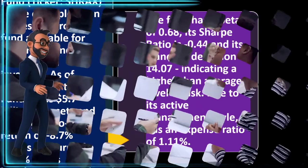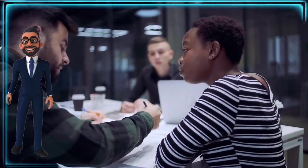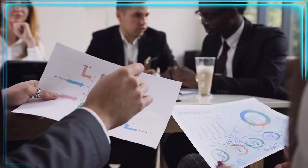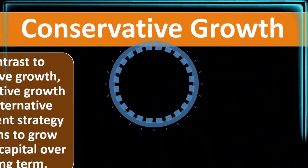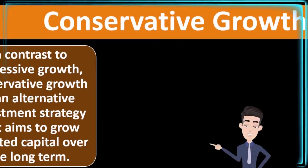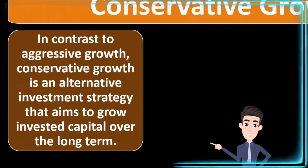The fund has a beta of 0.68, a Sharpe ratio of negative 0.44, and a standard deviation of 14.07, indicating a higher-than-average level of risk. Due to its active management style, it has an expense ratio of 1.11%. Active management versus indexing means the active manager has more leeway, which you're paying for, so you would expect the higher expense ratio there.